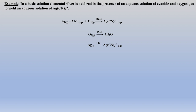First, we need to add water to the product side so that the oxygen, which is reduced, will be balanced. Then we need to equate hydrogens on both sides, so we need to add the same number of protons to the reactants side. Now we calculate the overall charge on both sides. To balance the charges, we need to add 4 electrons to the reactants side.